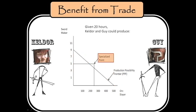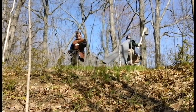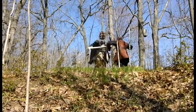If Kelder only makes swords and Guy were to only kill orcs, then they can achieve a higher level of production by taking advantage of the benefits of trade, putting them outside the production possibility frontier. Now our friends have more time to enjoy to themselves, thanks to their newfound efficiency.